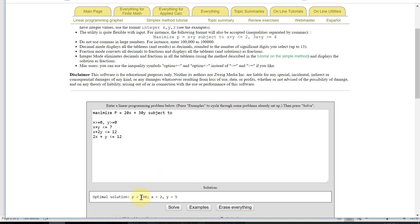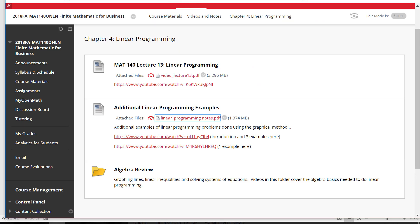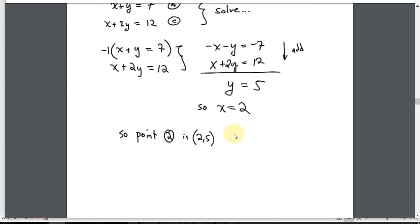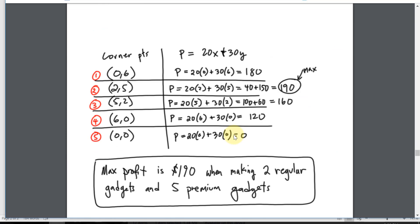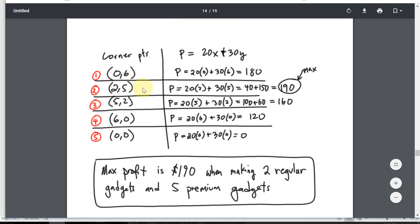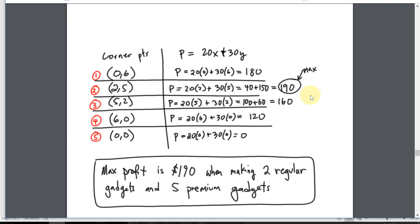Okay, so this tells me maximum profit is $190 if you make two of the regular gadgets and five of the premium gadgets. Sure enough, going through that work, I get the same result in the graphical method, so both these two different methods are giving me the same answer.